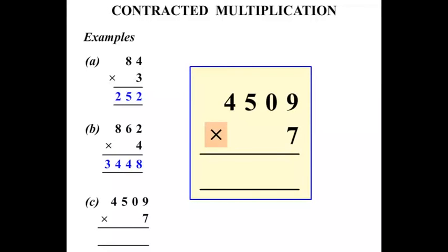The next one, 4,509 times 7. Again, always look to make sure that it is times. If there was a plus sign there, it would be completely different. But it is times in this lesson.